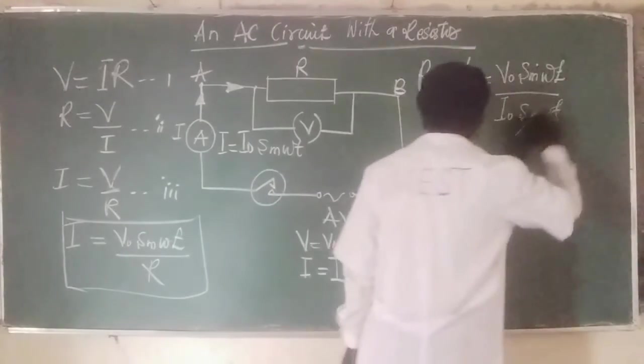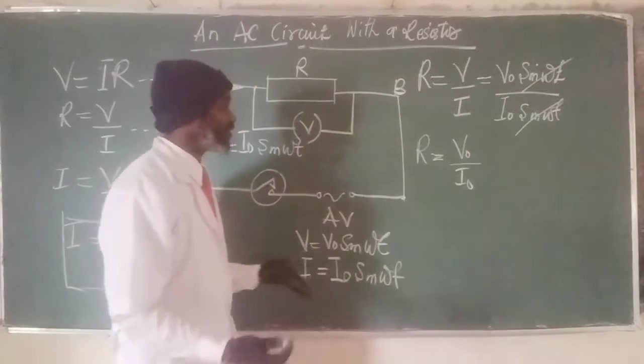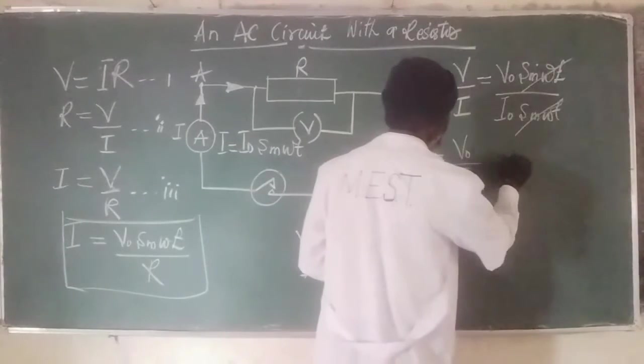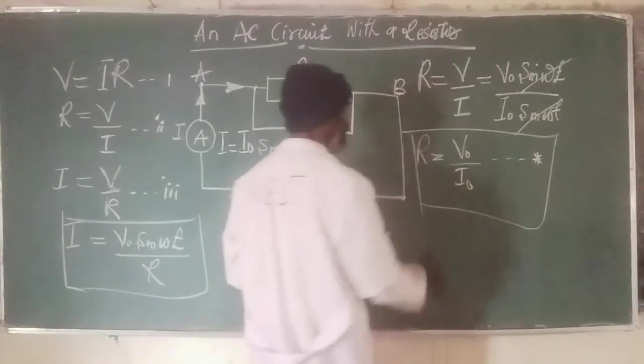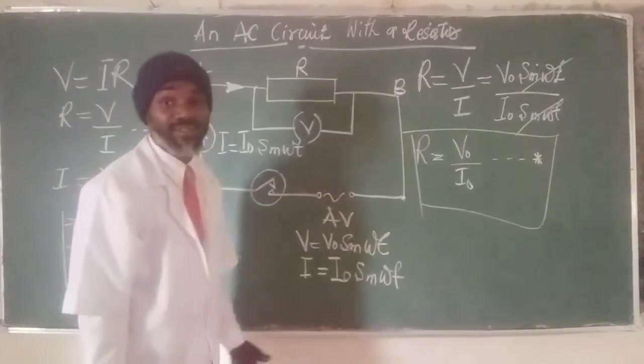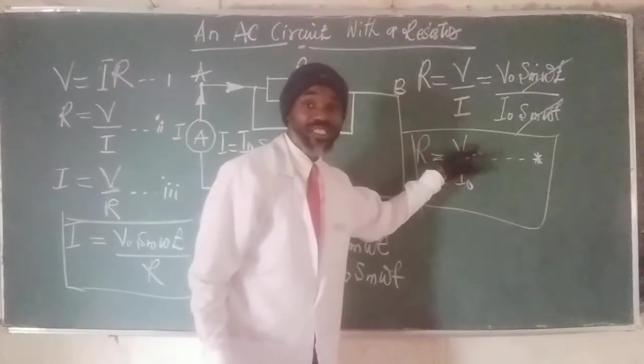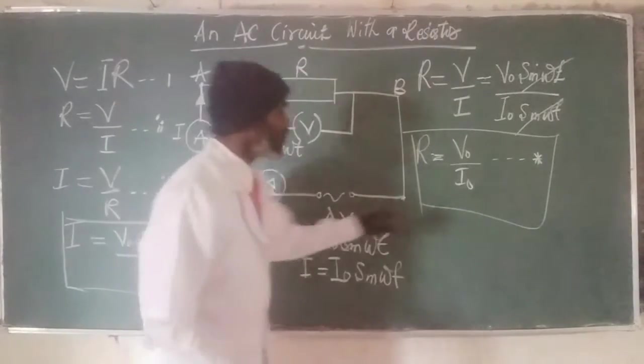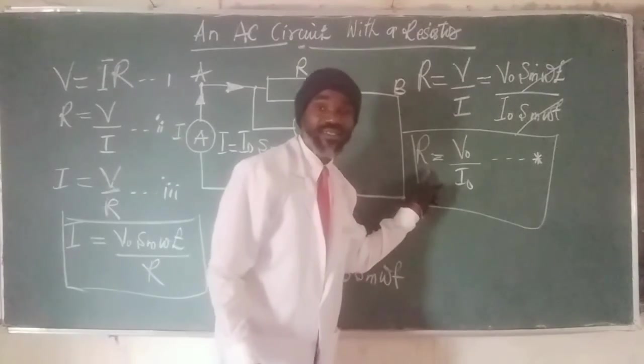Because this becomes lots. This is very simple. So we can call this the equation that will give us the value of the resistance if we want it. If we are given the peak value voltage and we are given the peak value current, we can use it to calculate the value of the resistance.